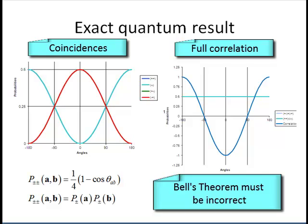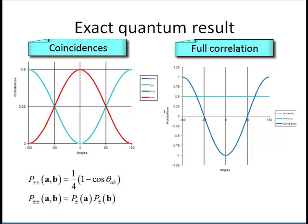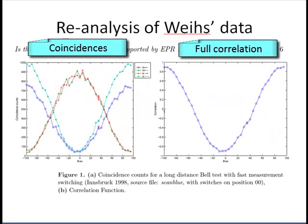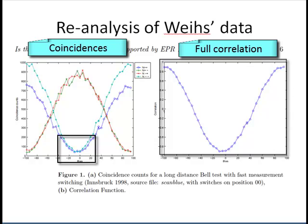There are other settings of the hidden variables other than the ones that maximize the probability and give the quantum result. Let's look at the anomalies. These are the joint probabilities and the full correlation as extracted by Krennikov from Gregor Weiss data. Note that P plus plus and P minus minus do not coincide as quantum mechanics predicts. Also, the maxima and minima are shifted, even though these differences cancel when summed up appropriately.